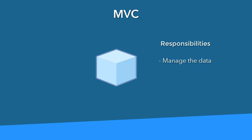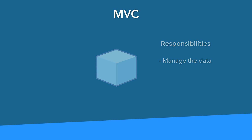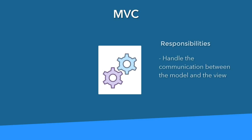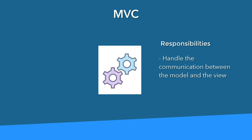The last piece of the puzzle is the controller, which is what the C stands for in MVC. The responsibility of the controller is to handle the communication between the model and the view. That communication is twofold.